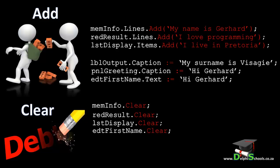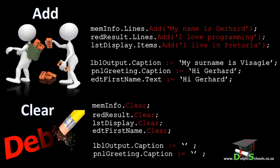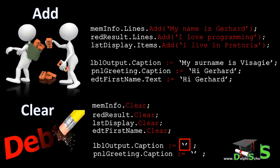However, we do not use the clear method to remove captions. To remove a caption from a label, a panel, or a button, you must assign an empty string to the caption property. An empty string is two single inverted commas without any text enclosed — in other words, you type a single quotation mark followed by another single quotation mark, with no text or spaces between them.